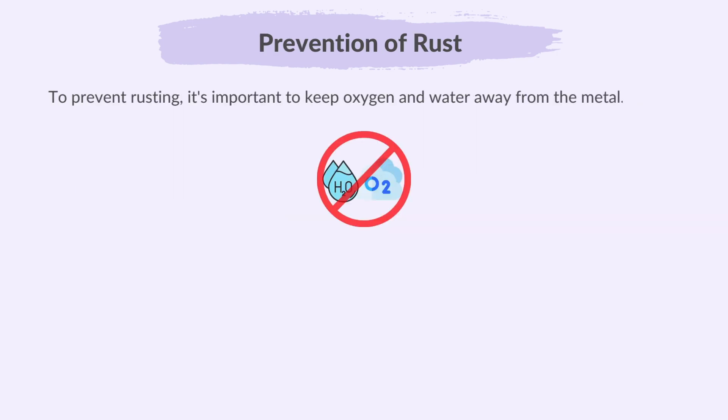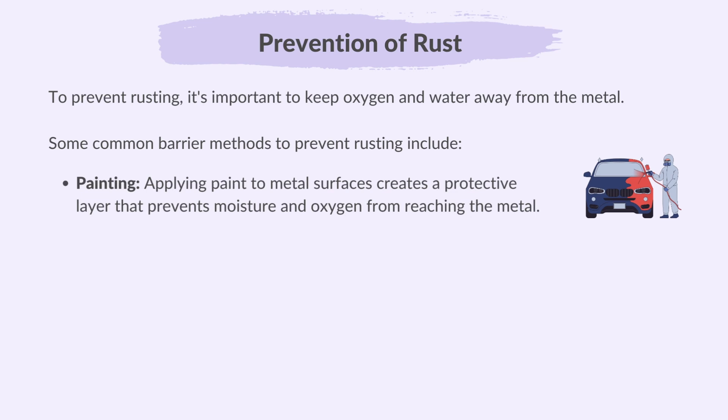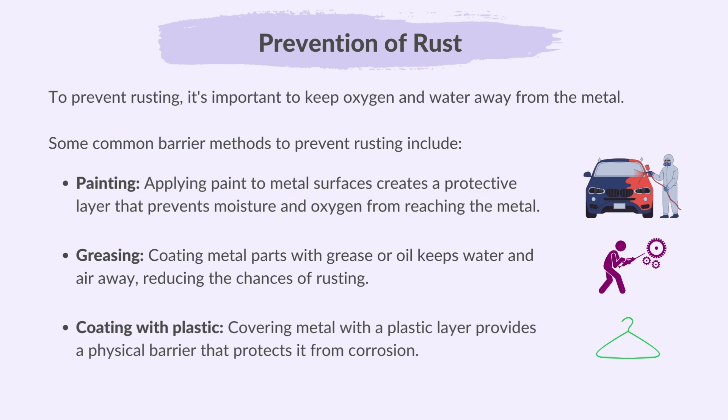To prevent rusting, it's important to keep oxygen and water away from the metal. Several methods can achieve this. Some common barrier methods to prevent rusting include painting — applying paint to metal surfaces creates a protective layer that prevents moisture and oxygen from reaching the metal. Greasing — coating metal parts with grease or oil keeps water and air away, reducing the chances of rusting. Coating with plastic — covering metal with a plastic layer provides a physical barrier that protects it from corrosion.